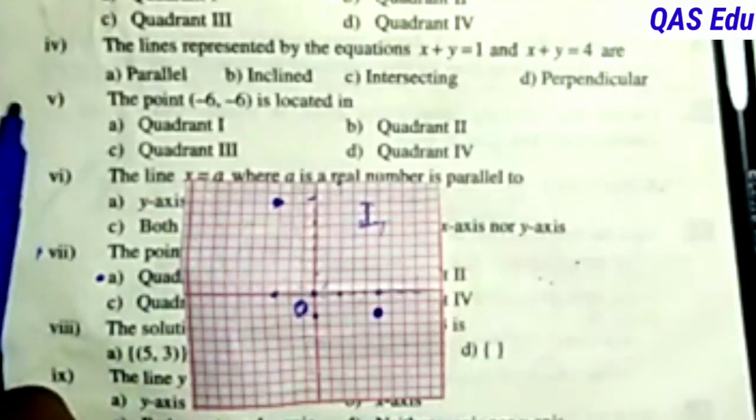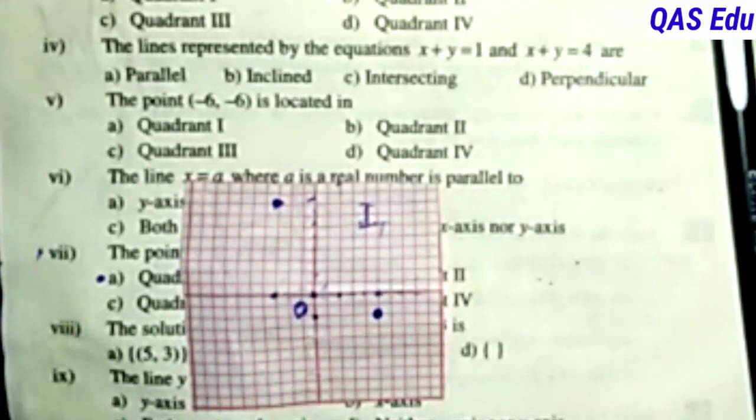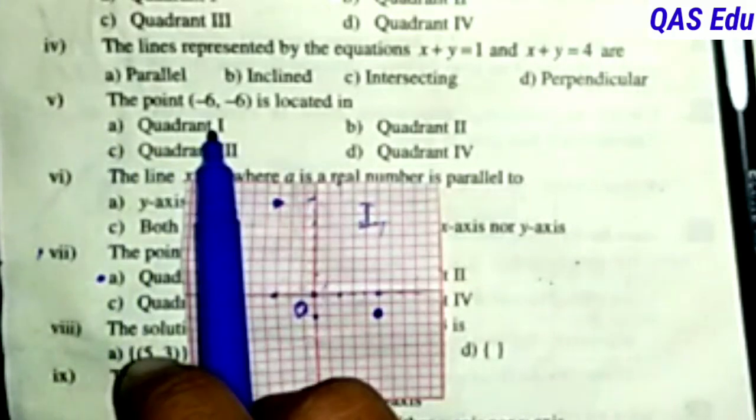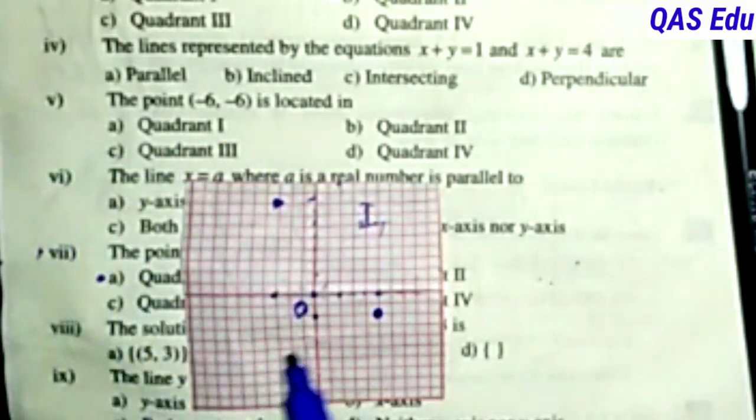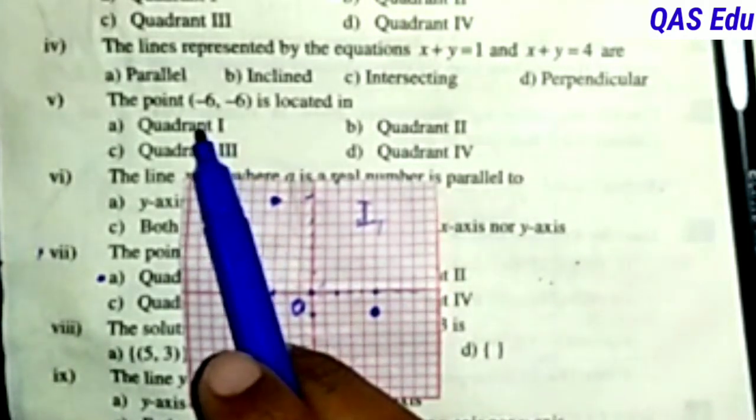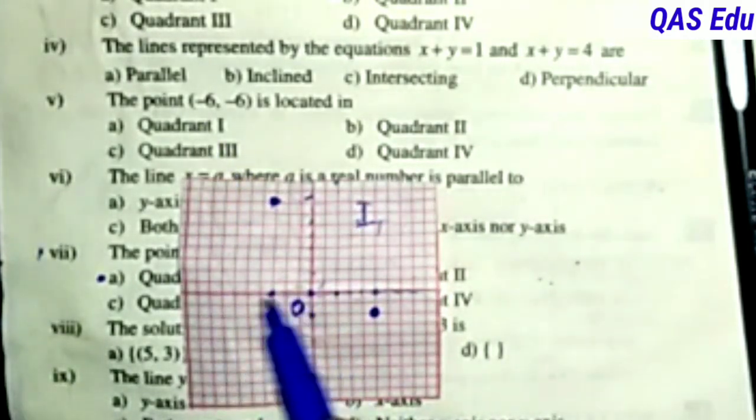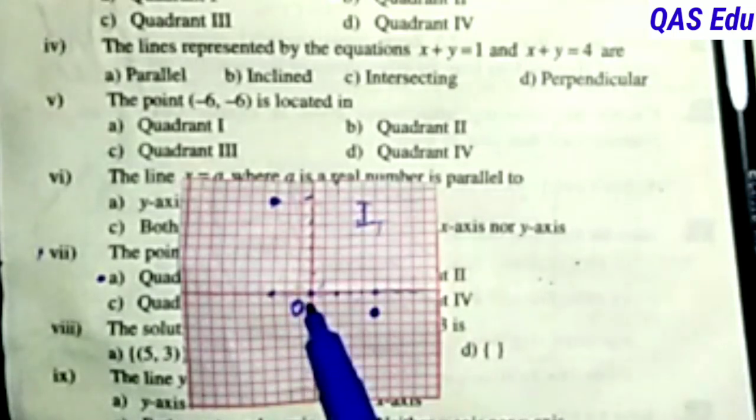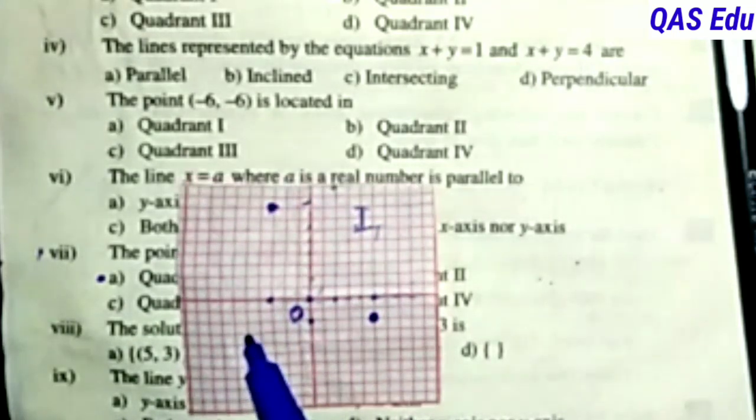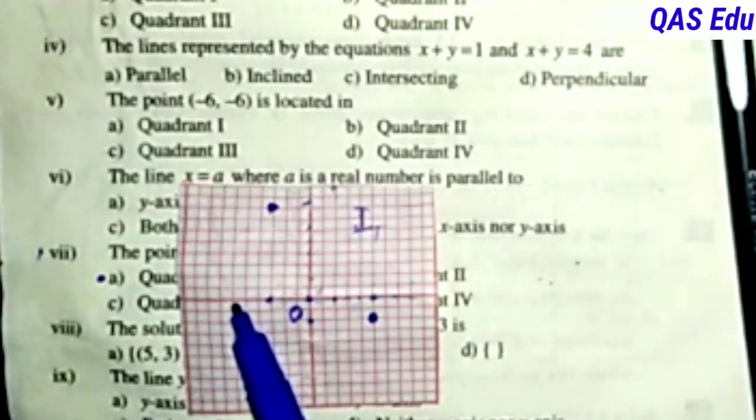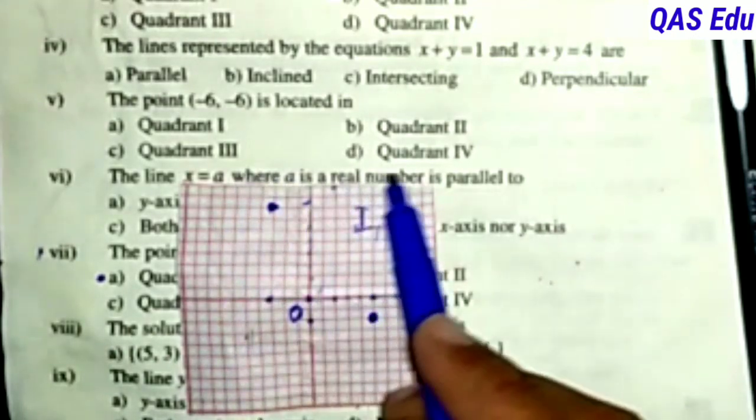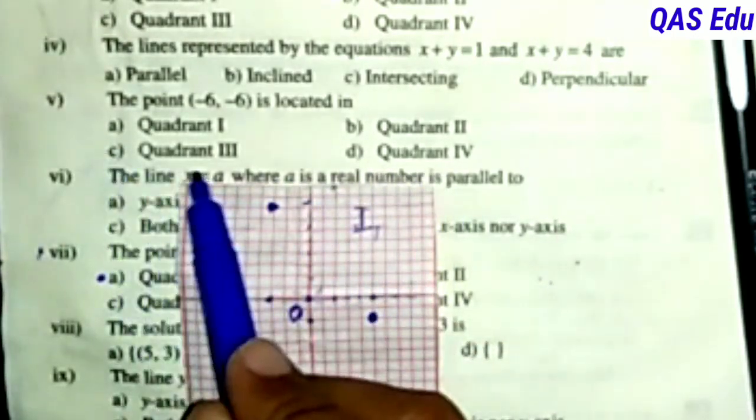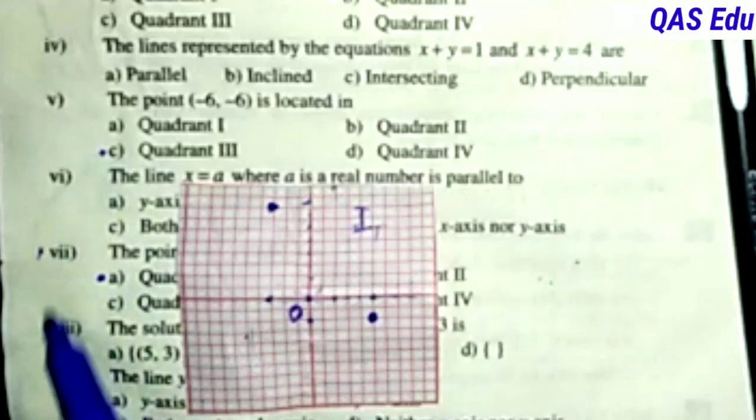Question 5 or 7: The point (-6, -6) is located in that quadrant. X is negative, y is negative. When both x and y are negative, it's in the third quadrant. So (-6, -6) is in quadrant 3. The correct option is C.